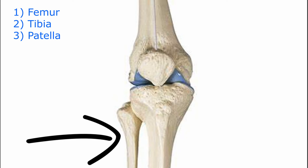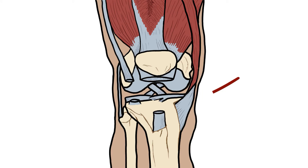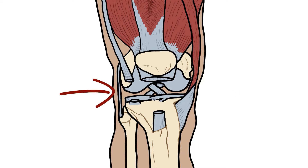You have four ligaments: you have the anterior cruciate ligament and the posterior cruciate ligament in a cross, you've got the medial collateral ligament on the medial aspect, and then the lateral or fibular collateral ligament on the lateral aspect. You have two fiber structures known as the meniscus — a medial one and a lateral one.